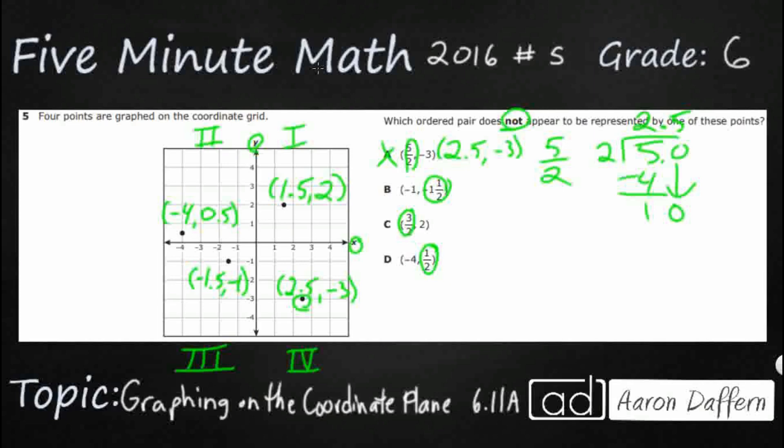So negative one and a half. Well, the one half is just equal to 0.5. That's something we learned in sixth grade. So we're just going to call that negative 1.5. Ah, take a look here. They flipped the order of the X and Y coordinates. I'm thinking that's going to be my answer. Let's double check on C.